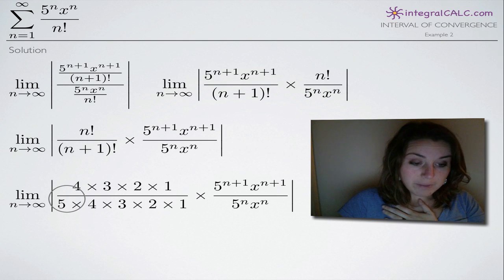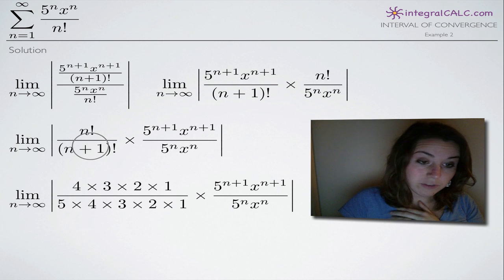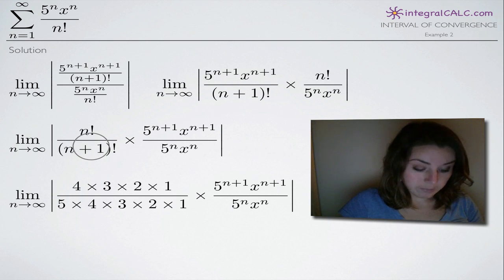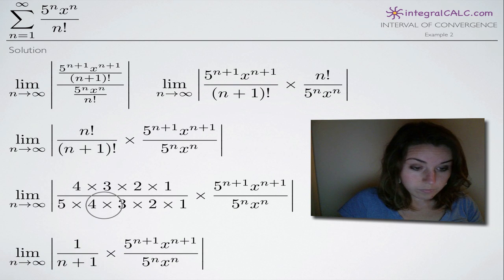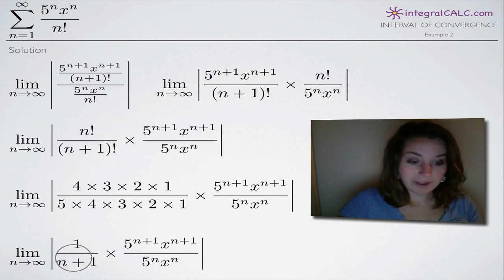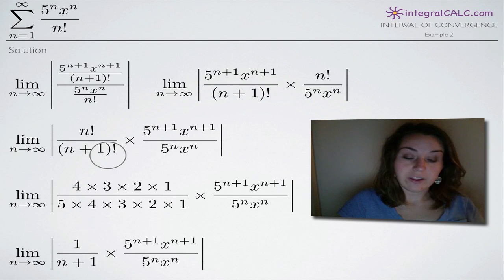All that's going to remain is 1 over 5 — or more generally, 1 over n plus 1. Everything in the numerator cancels and we're just left with n plus 1, no factorial, just n plus 1 in the denominator. So I'm going to change this first fraction to be 1 divided by n plus 1.